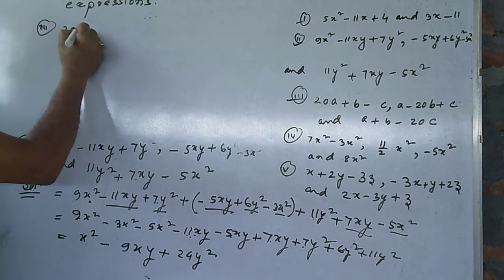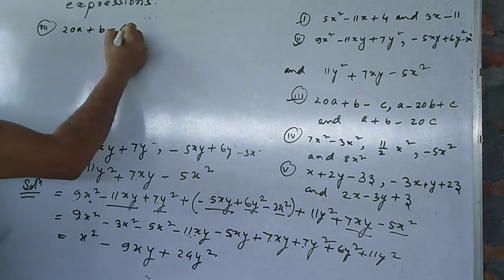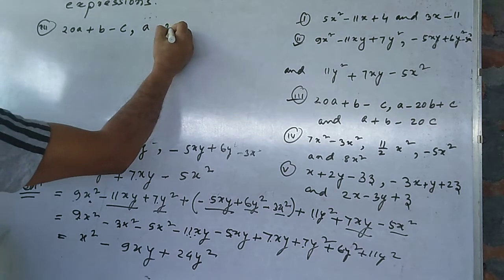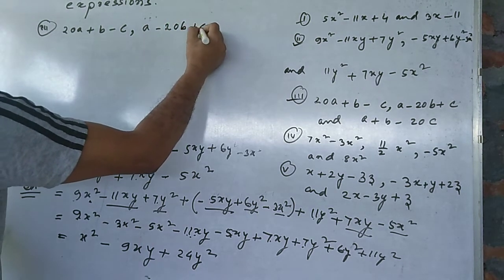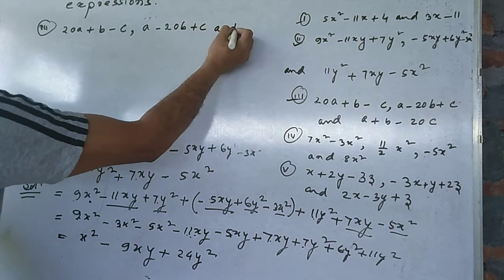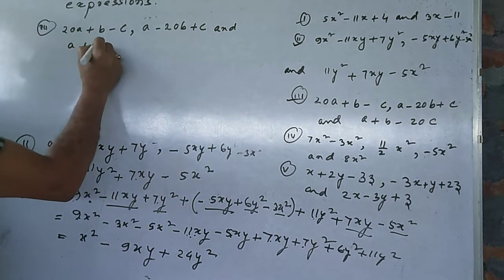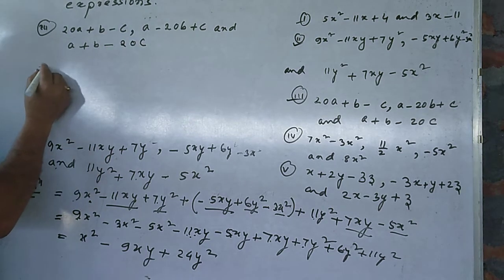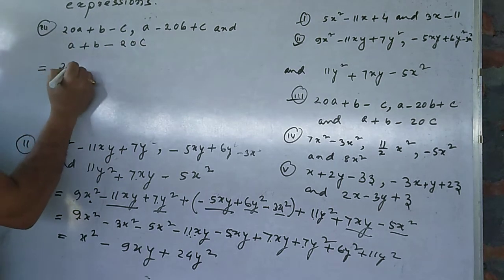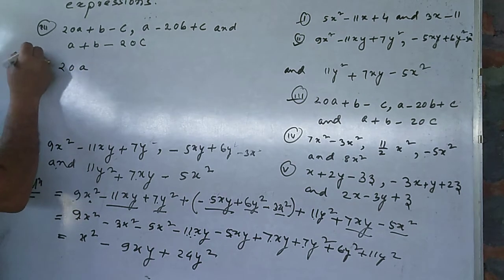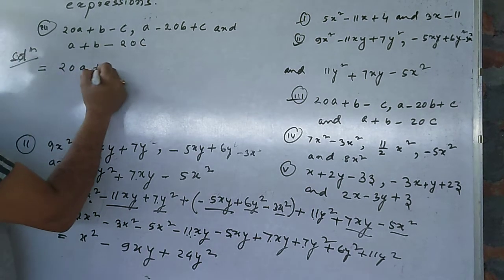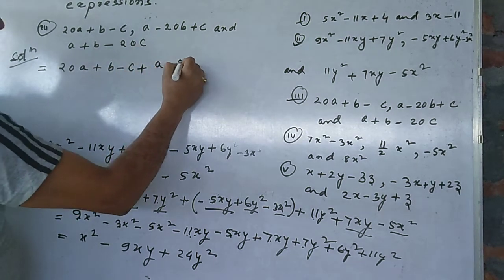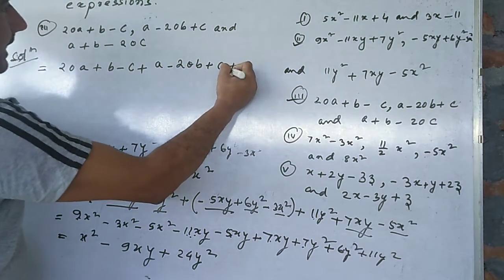Number three: 20a plus b minus c, a minus 20b plus c, and the third term is